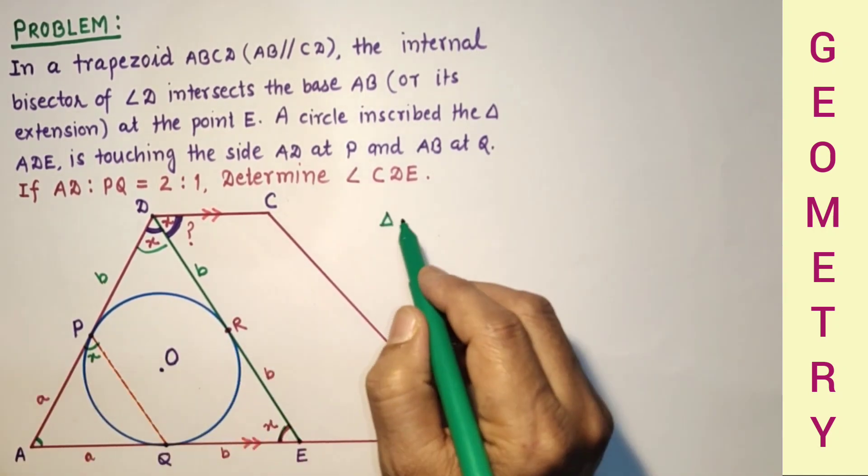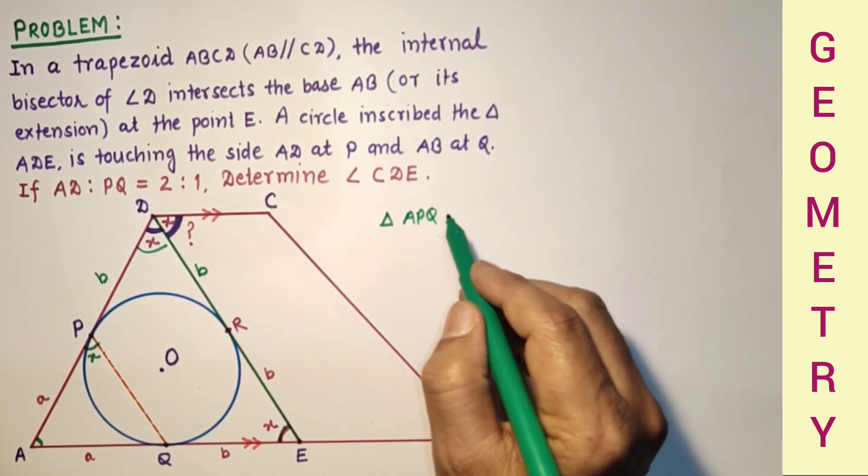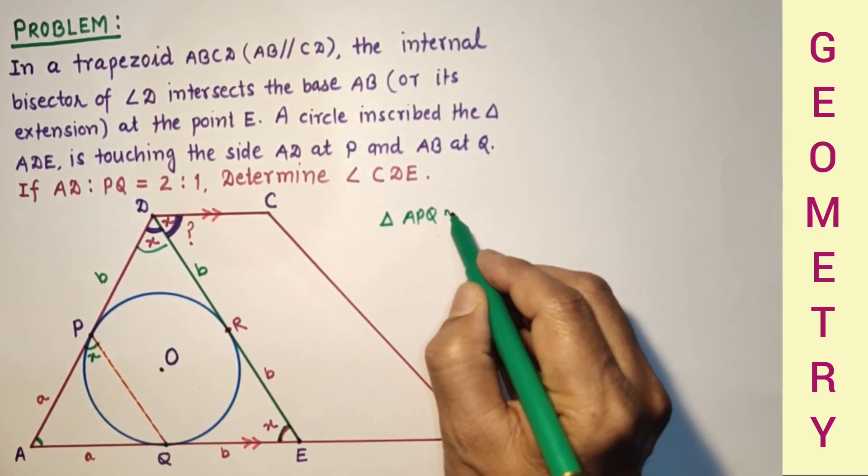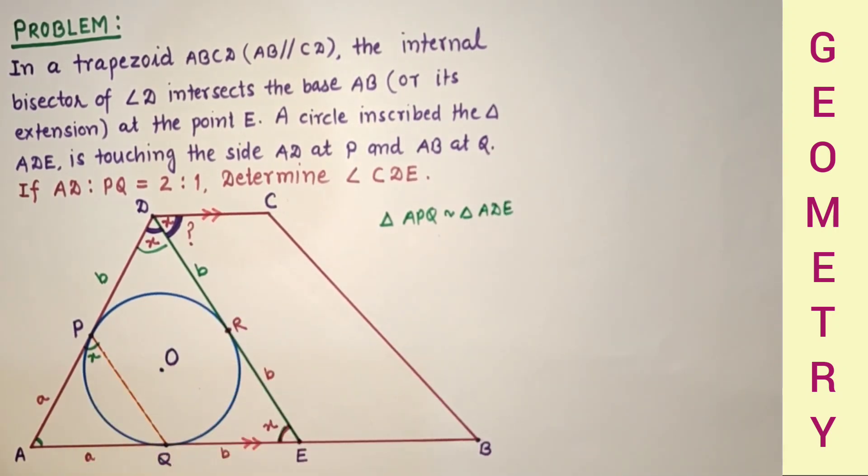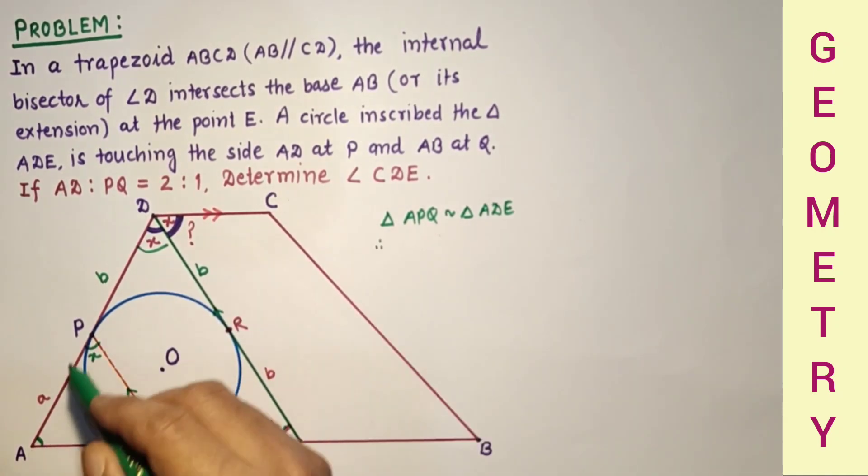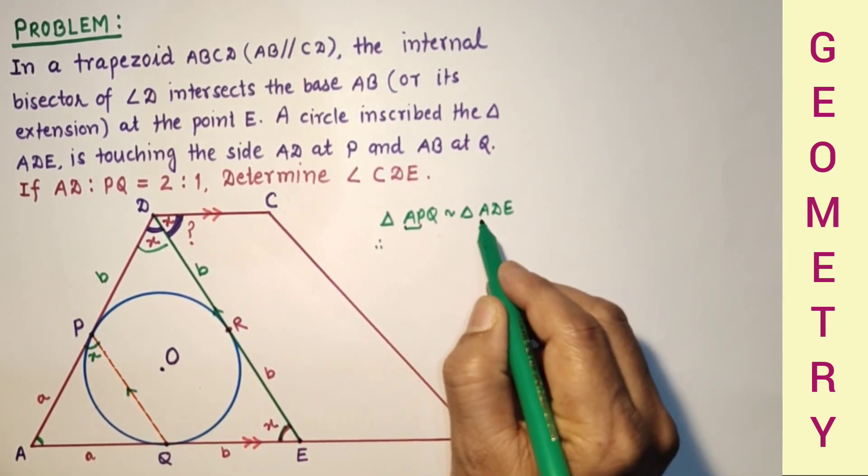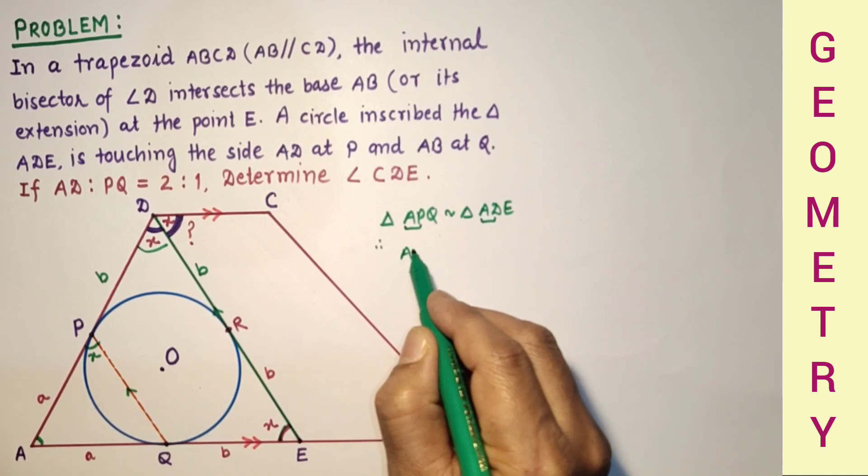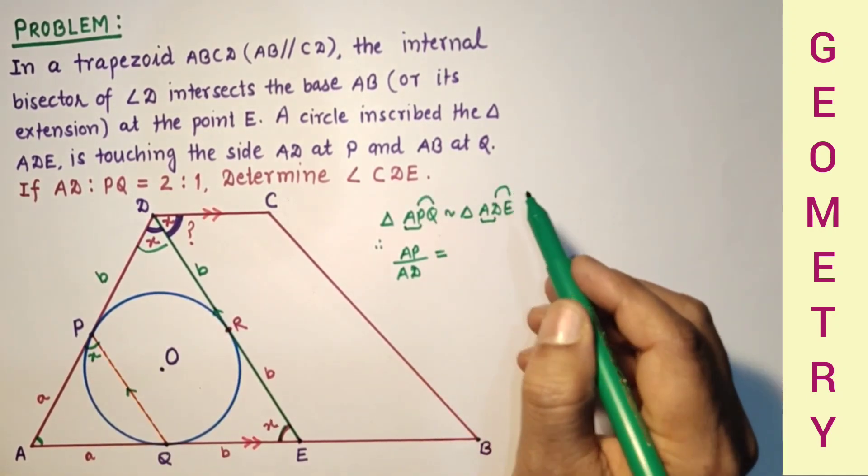Triangle APQ is similar to triangle ADE by AA test of similarity, and these two we found parallel by basic proportionality theorem. Therefore, AP by AD is equal to PQ by DE.